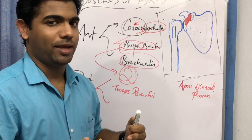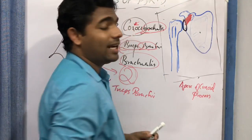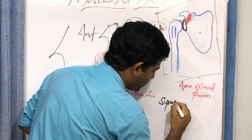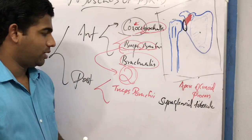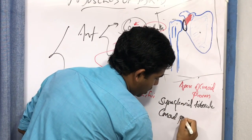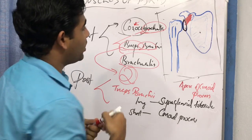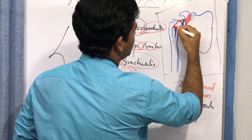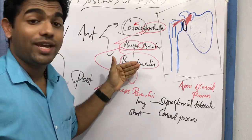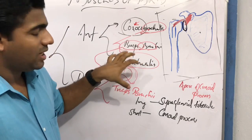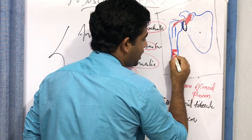The long head of the biceps brachii arises from somewhere above the coracoid process — from the supraglenoid tubercle. You have the glenoid fossa, and just above it is the supraglenoid tubercle. So the short head arises from the coracoid process and the long head arises from the supraglenoid tubercle. The brachialis, the remaining muscle, is completely related to the arm alone and arises from the anterior aspect of the shaft of the humerus.